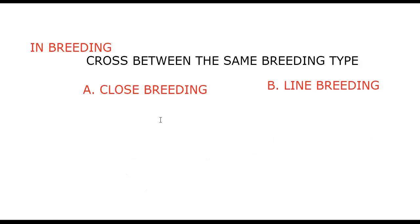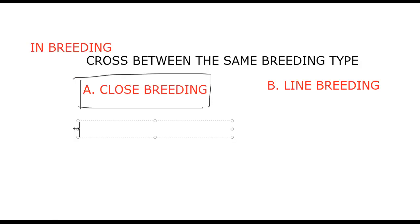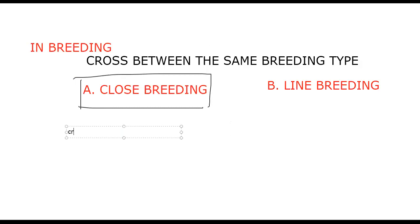Close breeding is a kind of breeding technique where we do a cross between very closely related animals. Cross between closely related individuals is called close breeding.